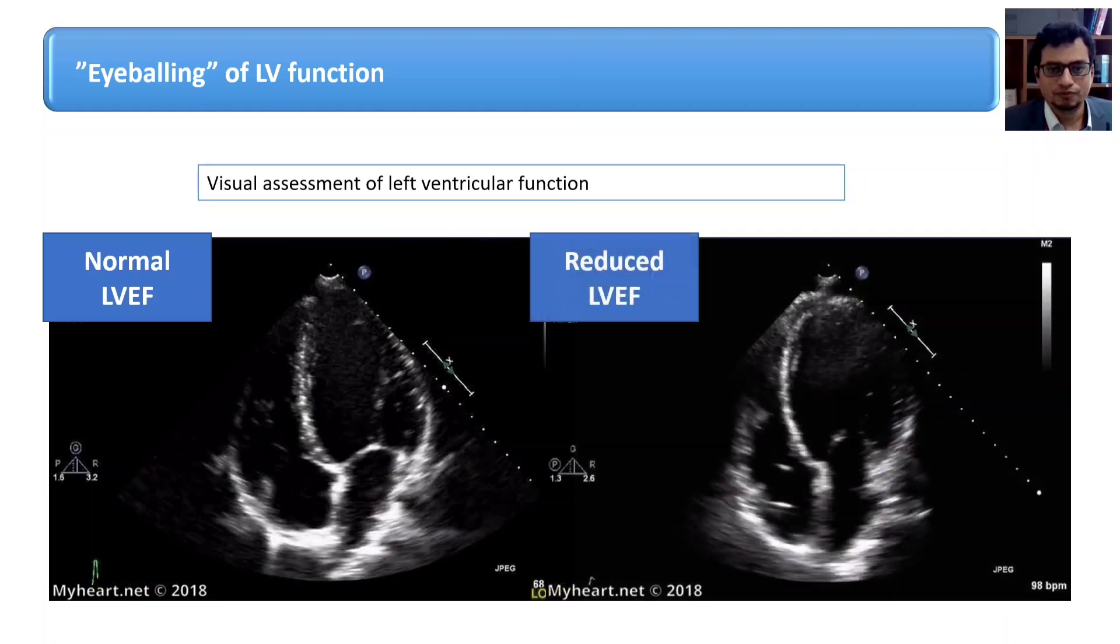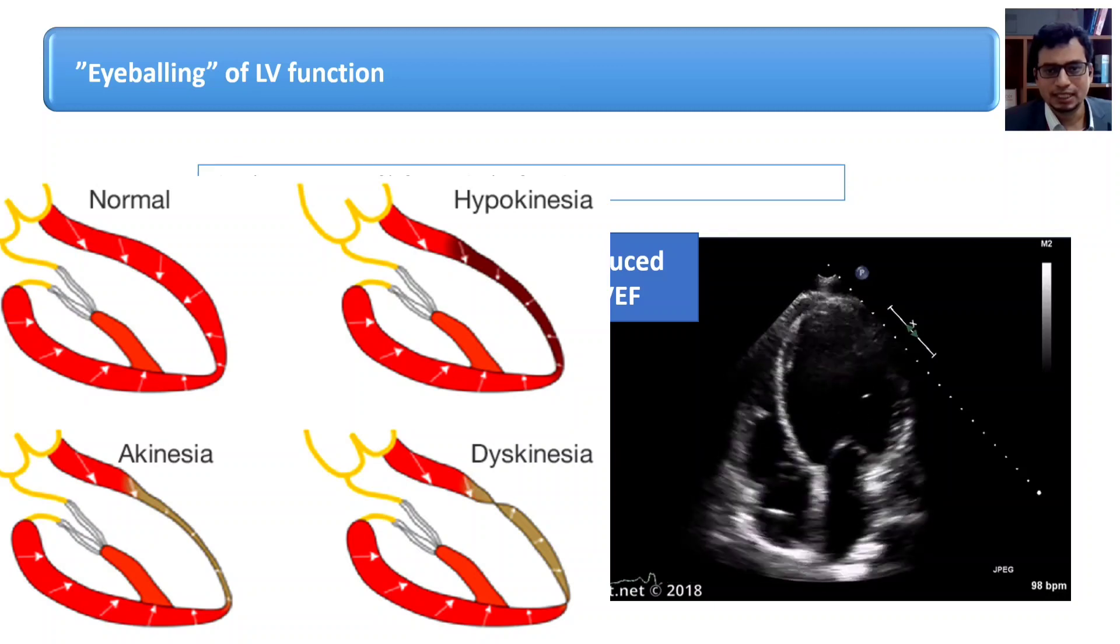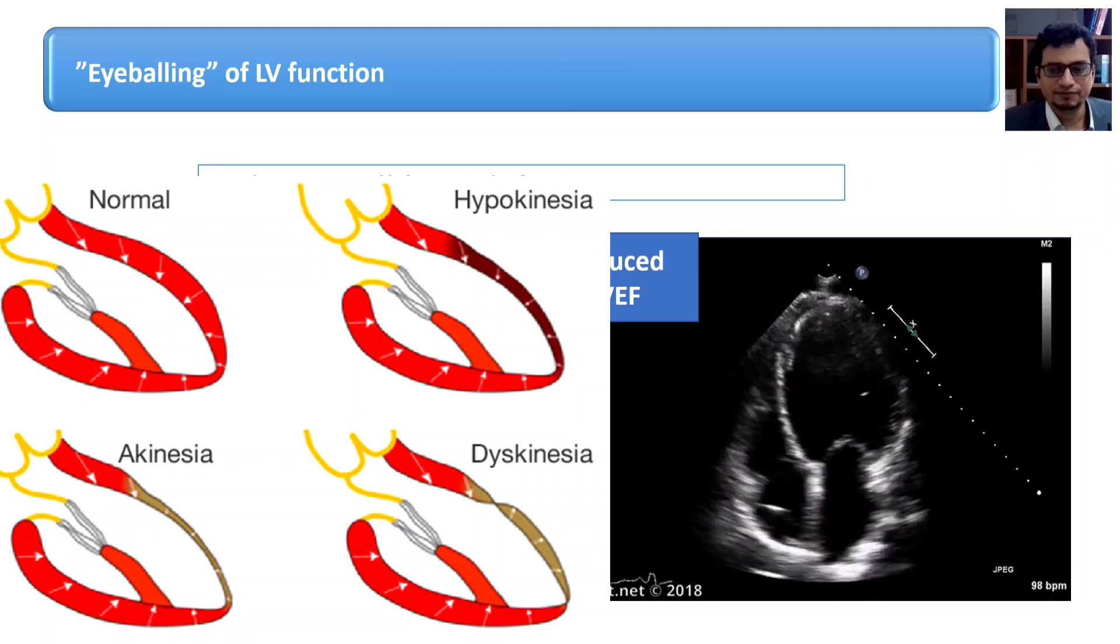Each segment should be assessed in multiple views. Follow the scoring system for the visual assessment of wall motion abnormalities: normal movement, hyperkinetic, hypokinetic, akinetic and dyskinetic. So there are five types of movement possible.